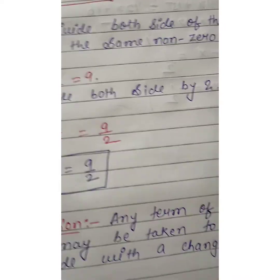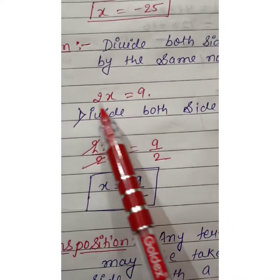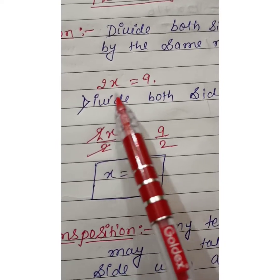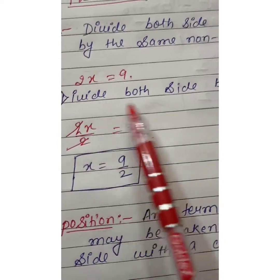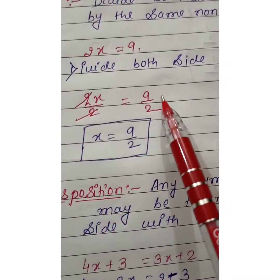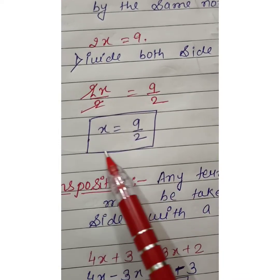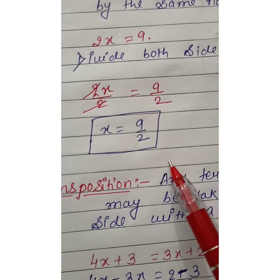Divide both side by 2. The number in multiplication, we divide by that same number. 2x by 2 equals 9 by 2. 2 and 2 cancel out. So finally we obtain x equals 9 by 2.